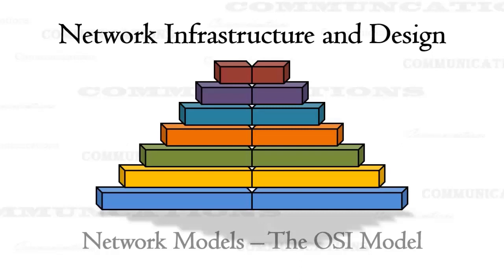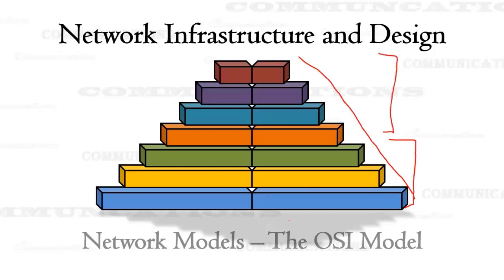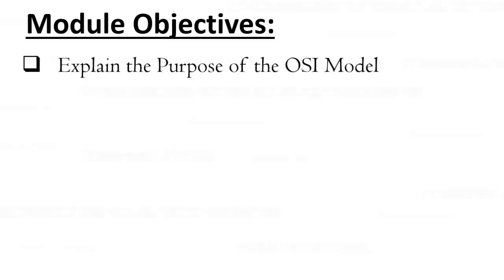We're going to discuss two different network models. The first model is the OSI model. From this lesson, you're going to have a thorough understanding of each of the seven layers in this model. We're also going to talk about how those layers communicate, the devices that operate at specific layers, and some of the protocols that operate on these layers as well.